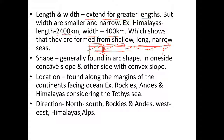The shape of folded mountains is generally arc-shaped, with one side concave and the other side convex. They are located along the margins of the continents facing the ocean. Examples include the Rockies, Andes, and Himalayas. For the Himalayas, we consider the ancient Tethys Sea, as it was located along the margins of continents facing that ocean.